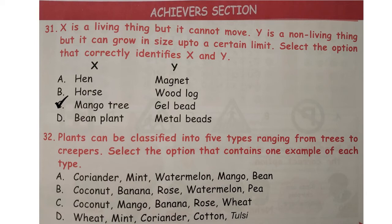Question number 32: plants can be classified into five types ranging from trees to creepers. Select the option that contains one example of each type. Answer is option B — as coconut is a tree, banana is a herb, rose is a shrub, watermelon is a creeper, and P is a climber.